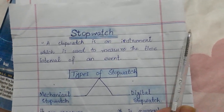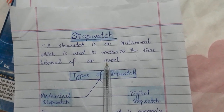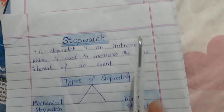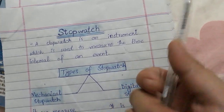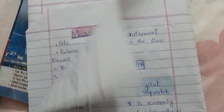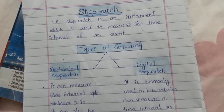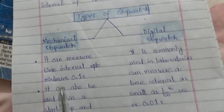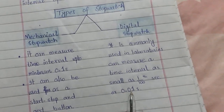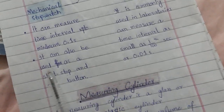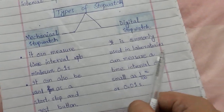The next topic is the stopwatch. The stopwatch is basically used to measure the time interval of an event. We have two types of stopwatch: one is mechanical stopwatch and the other is digital stopwatch. A mechanical stopwatch measures the time interval of an event.